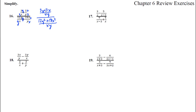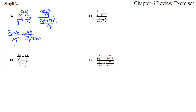Now remember, this is division of two fractions, which is the same as taking 3y plus 3x over xy and timesing by the reciprocal. So it's the top fraction divided by the bottom fraction, which is timesing by the reciprocal — that's xy over 12y squared plus 18x squared. The xy's cancel.